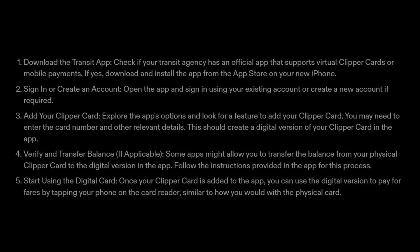Step 2: Sign in or create an account. Open the app and sign in using your existing account, or create a new account if required. Step 3: Add your Clipper Card. Explore the app's options and look for a feature to add your clipper card. You may need to enter the card number and other relevant details. This should create a digital version of your clipper card in the app.